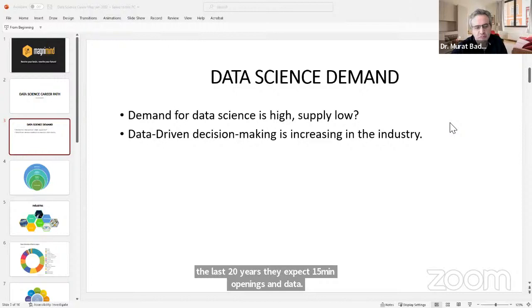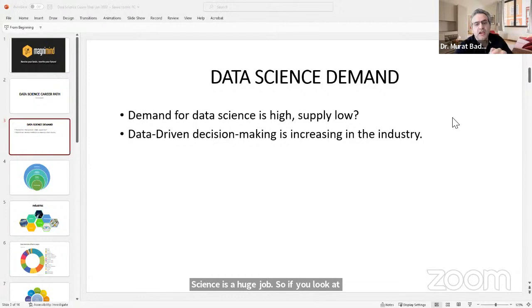According to McKinsey, in the last 20 years, they expect 50 million openings in data science. This is a huge job. If you look at companies 20 or 30 years back, you didn't see any Facebook, Google, or Amazon. Now, maybe Google itself has 100,000 to 200,000 people working there. Those jobs were not available. Those industries were not there. Now there are a million people maybe working in five to 10 companies alone. New companies in high tech, new technologies will grow, new jobs will emerge, and the center of that will be data science because everything is producing data.